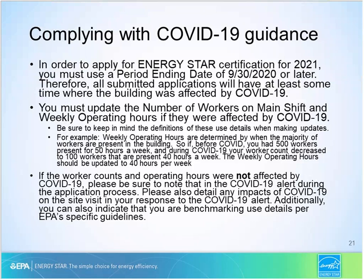If one or both of these use details were not affected by COVID-19, it's important to indicate in your explanation for the COVID-19 alert — which now appears for every single application — that the use details did not change. The review team has found through many follow-ups that most applicants were not aware of how EPA defines these use details or requires them to be changed. If your use details really were unaffected, please provide a detailed explanation for why this was the case and reference the use detail definitions to ensure they've been correctly accounted for.